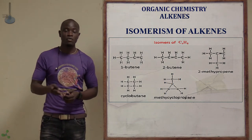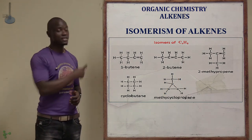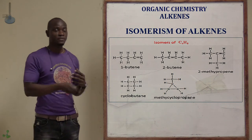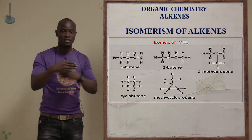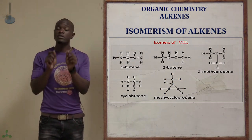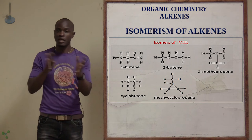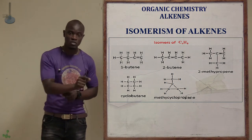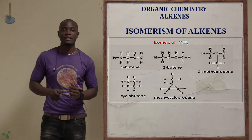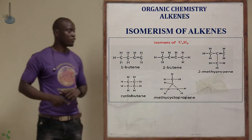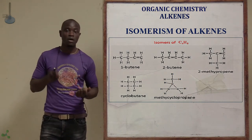The structural formula for butene is drawn with the double bond in a specific position. To draw different isomers of butene, you alter the structure while keeping exactly four carbons and eight hydrogens. We also have cyclobutene as an isomer of butene.